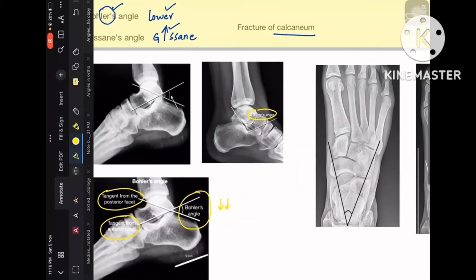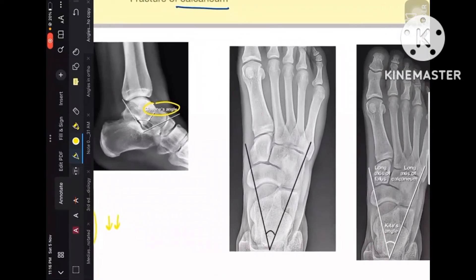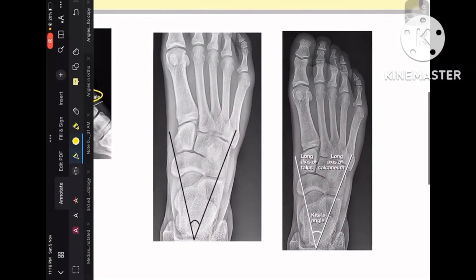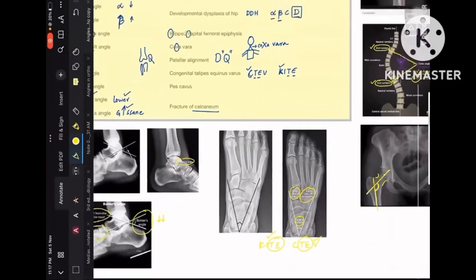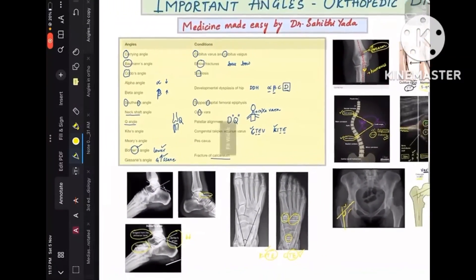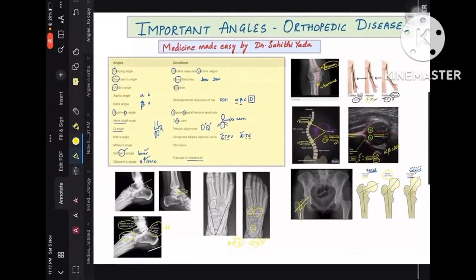Kite's angle is formed by the long axis of the talus with the long axis of the calcaneum, and it is seen in CTEV — congenital talipes equinovarus. This completes the mnemonic parts as well as all the angles you need to know. Don't stress about this topic too much, as mostly superficial questions are asked from it.